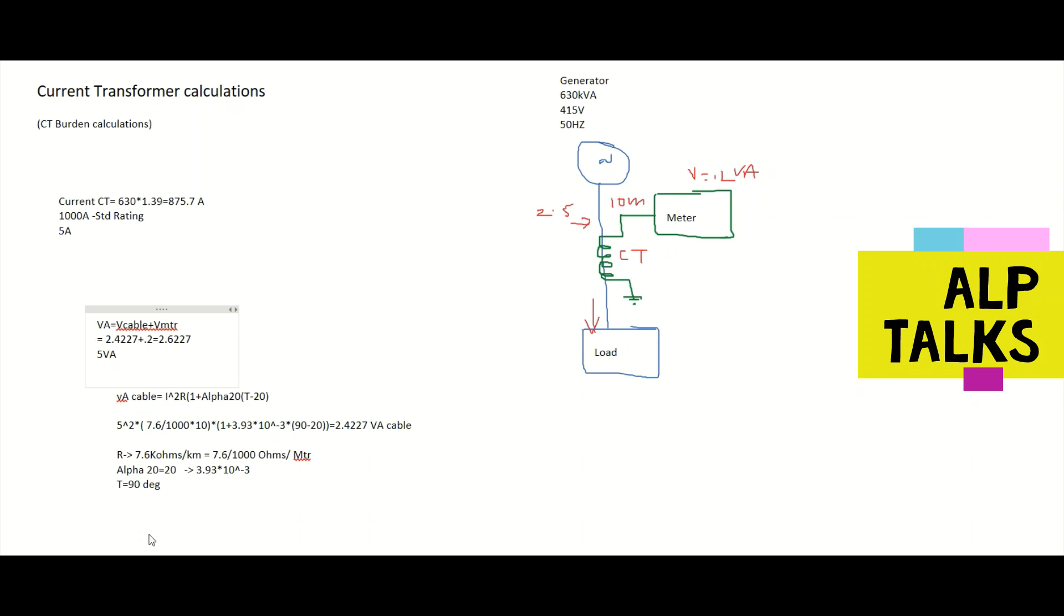So what is the specification? Whatever the CT is there, CT specification, let's summarize it. 1000 amp by 5, this is the ampere rating. Burden is 5 VA. This is by considering 10 meter cable.